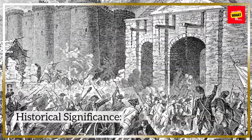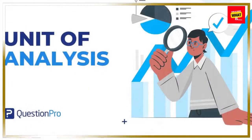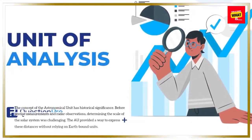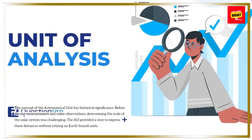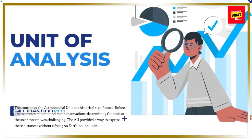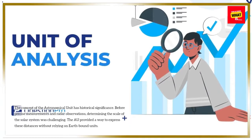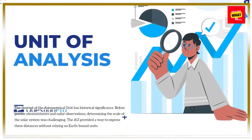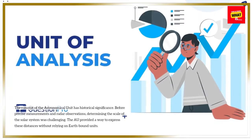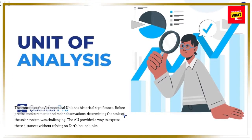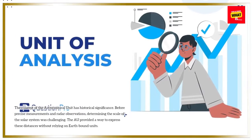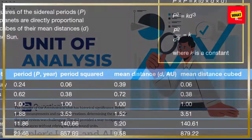Historical Significance: The concept of the astronomical unit has historical significance. Before precise measurements and radar observations, determining the scale of the solar system was challenging. The AU provided a way to express these distances without relying on Earth-bound units.